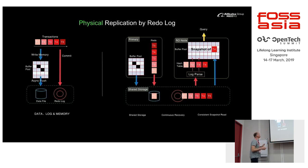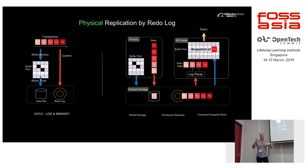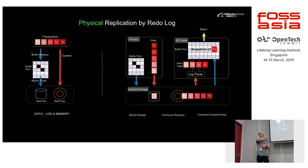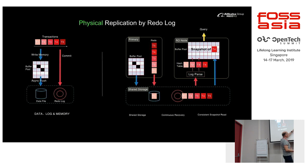This parallelism is very necessary because on the primary server there are multiple threads updating the database, so a single thread on the replica side would struggle to keep up. In MySQL replication, parallelism is limited to transactions from the same group commit. But in PolarDB, as long as changes are not on the same page, you can execute them in parallel, achieving a much higher degree of parallelism.